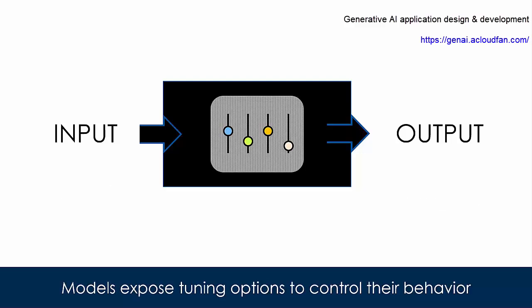Generative AI models allow users to change their behavior by way of tuning or control options exposed by the model. These controls are adjusted by the user to achieve the desired output from the Generative AI model. Now before going any further, let's take a look at a Generative AI application in action.